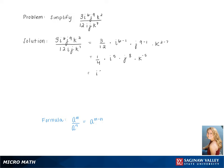We then move any negative exponents to the denominator of the fraction, giving us i to the 5th, j to the 8th, over 4k to the 5th as our final answer.